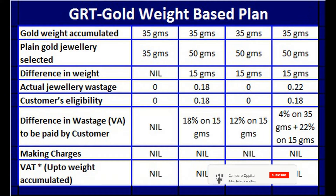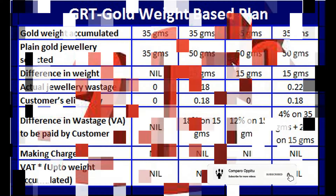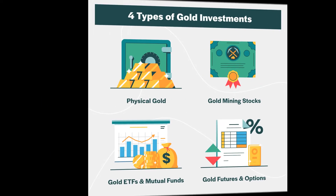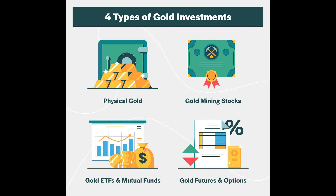When you buy physical gold, you will pay making charges of around 17% plus 3% GST, which can total around 20% in additional charges on top of the gold price.